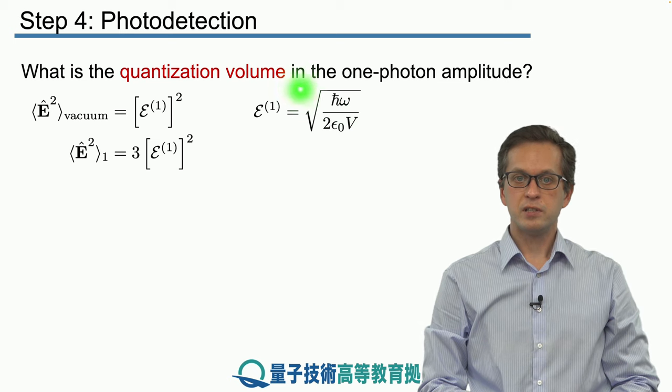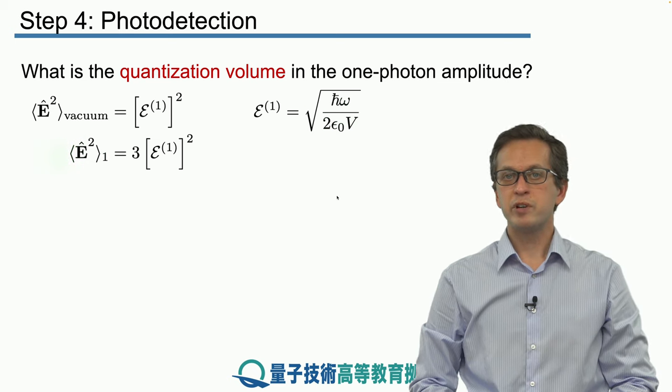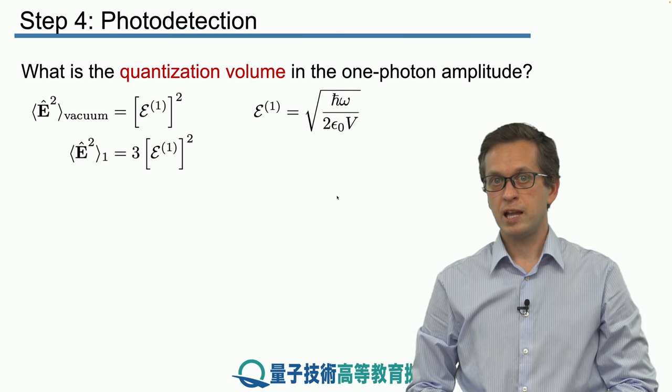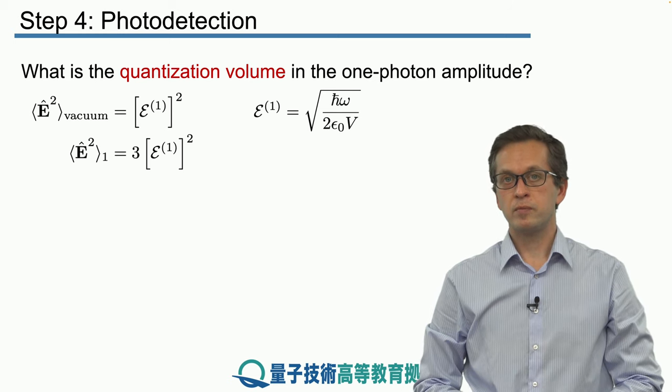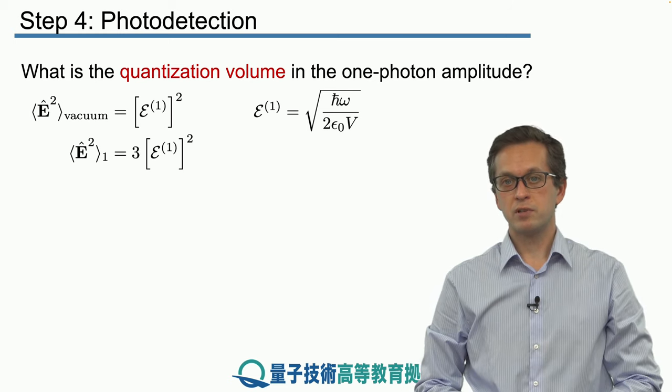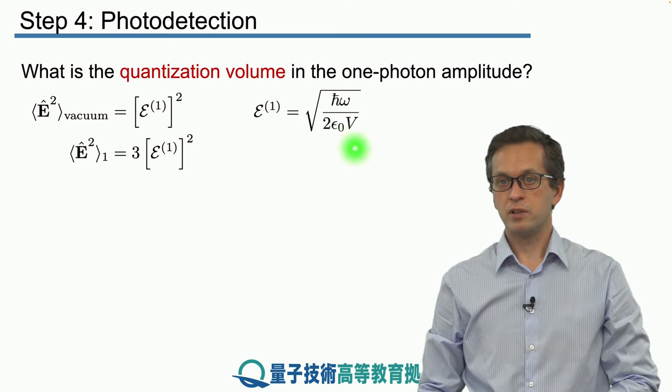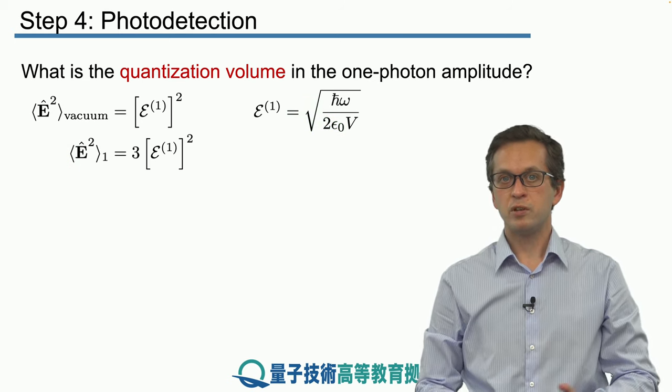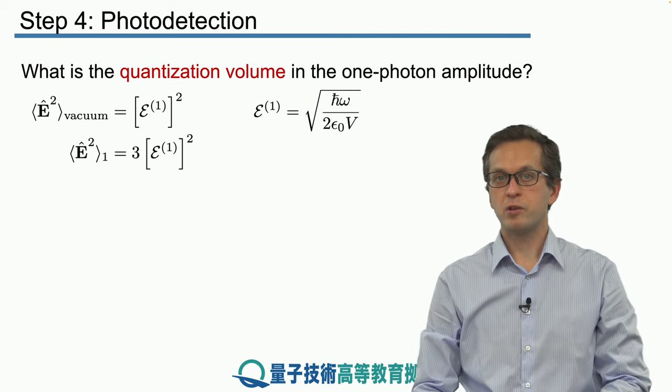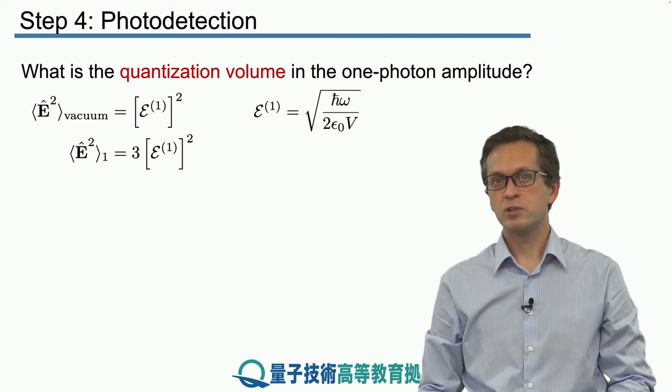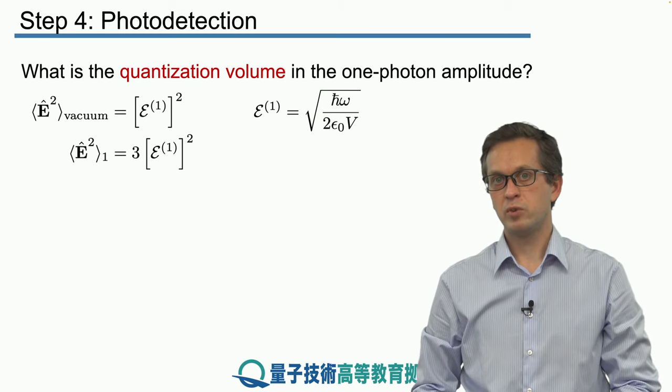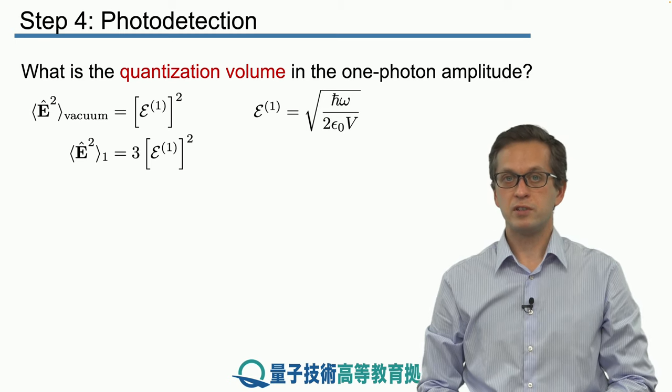These quantities, the fluctuations, are in principle measurable. We can measure them in labs getting concrete values but on the other hand this V seems to be arbitrary. So does it mean that we're going to measure something different just by considering different quantization volume? Or in other words, what is the correct quantization volume to consider in every physical scenario?